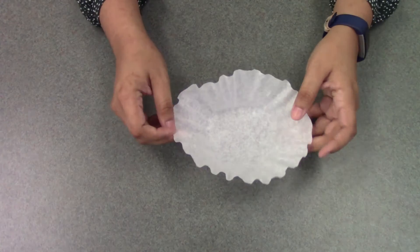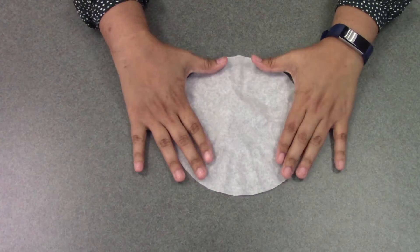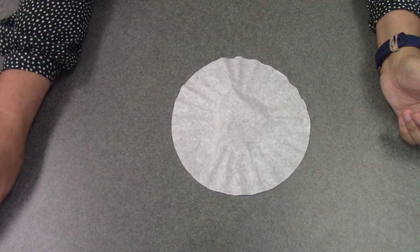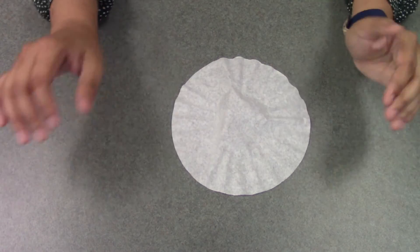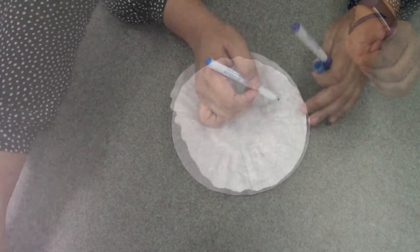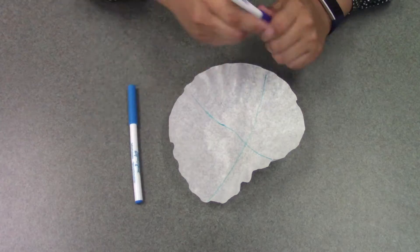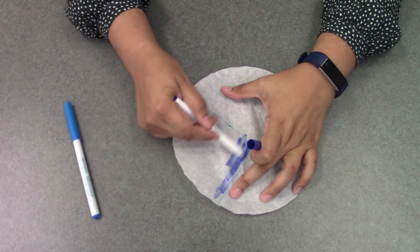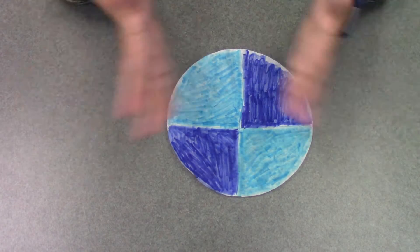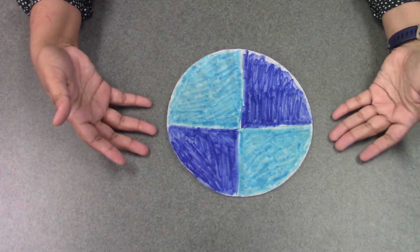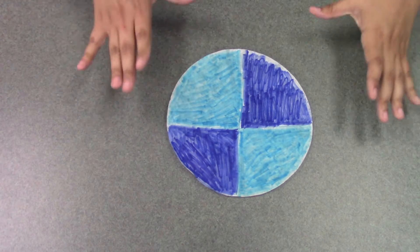Alright, so the first thing you're going to want to do is take your coffee filter and draw the design you want on it with your markers. Alright, so once you're done, you'll have your completed colored-in design on your coffee filter.